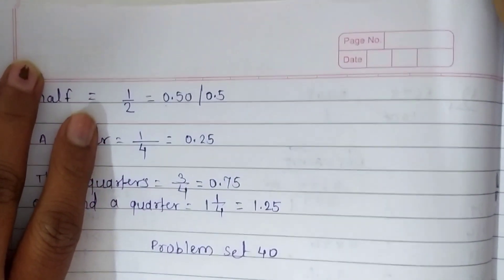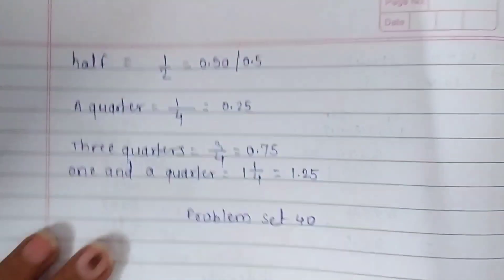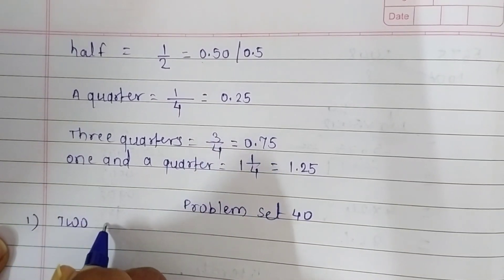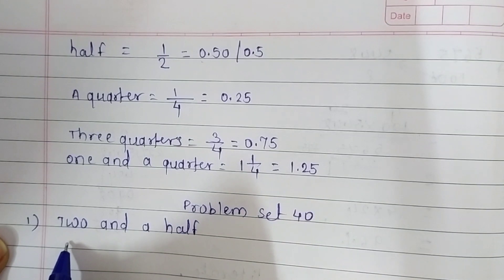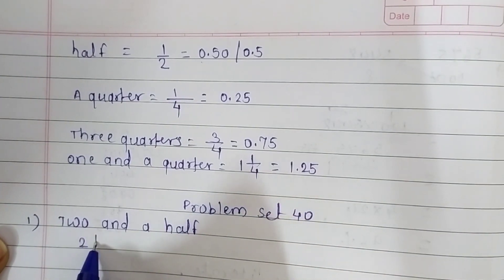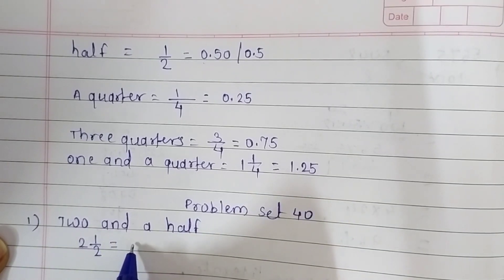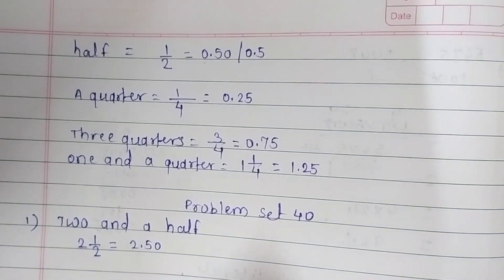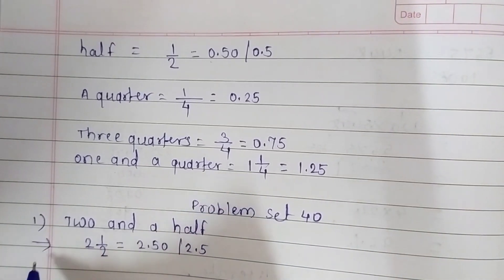The first question is two and a half. It is written as two and one upon two in fraction form, and in decimal form it is written as two point five zero, or two point five. This is the answer to this question.